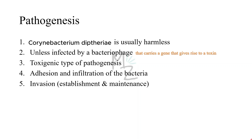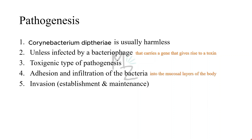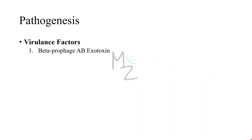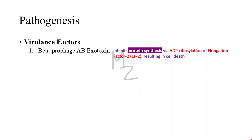The bacteriophage carries a gene that gives rise to the toxin. When Corynebacterium diphtheriae is infected by a bacteriophage, it will become pathogenic and cause infection. This bacterium adheres to the mucosal layers of the body. The virulence factor is the diphtheria toxin — the beta-prophage AB toxin — which inhibits protein synthesis via ADP ribosylation of elongation factor 2 (EF2), resulting in cell death or necrosis.